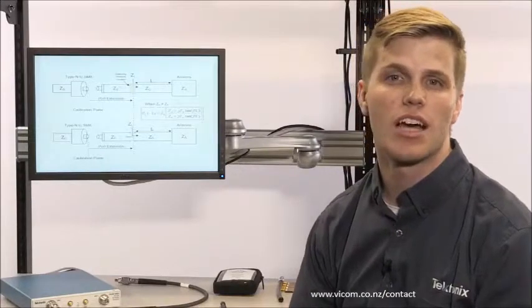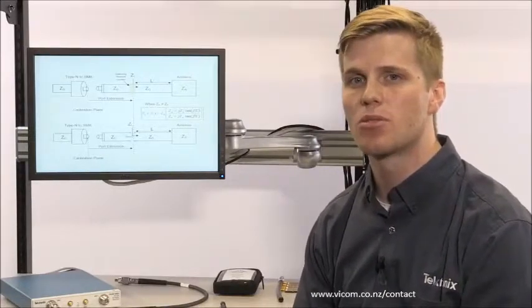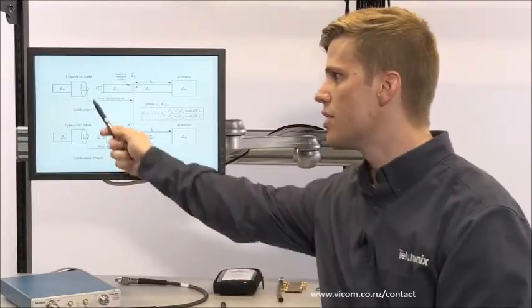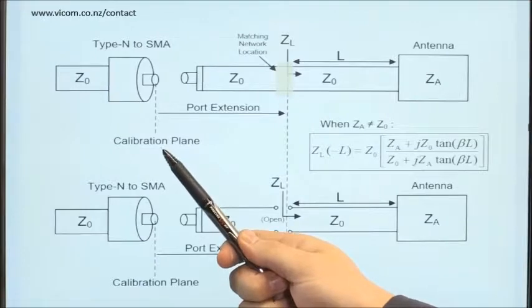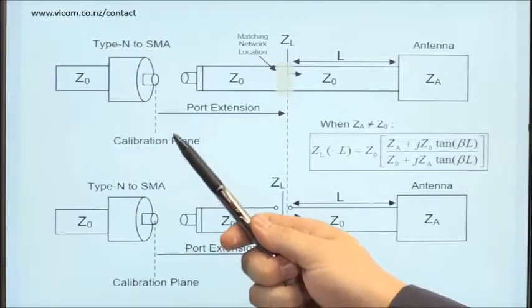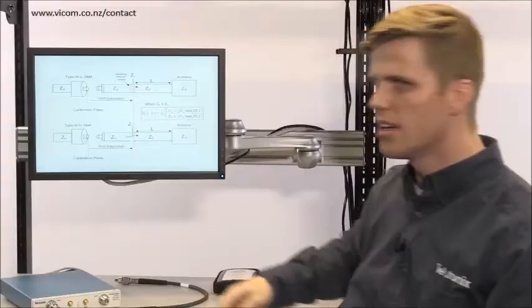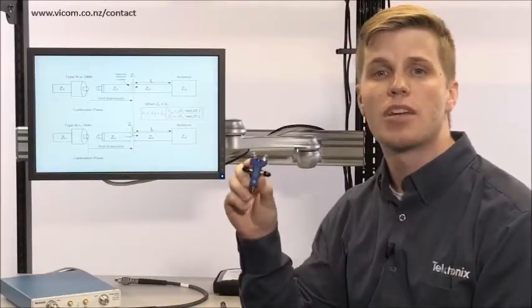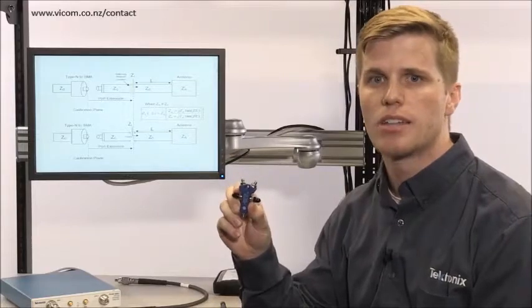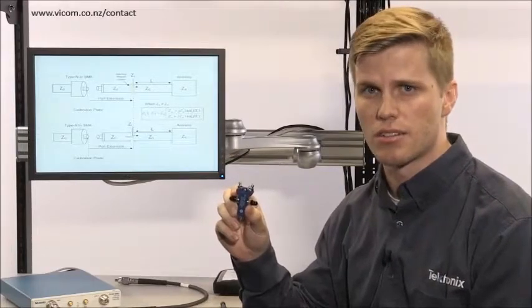The first step is to calibrate the VNA as close to the location of the matching network as possible. In this case, it's the end of the type N to SMA connector. And then to get the calibration plane to the location of the matching network, we're going to have to apply a port extension. So first, I'll calibrate using my 3.5 millimeter spinner cal kit at the end of the type N to SMA connector.